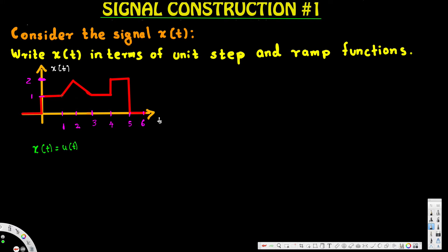This holds until a certain point, because after that we have a ramping function — a ramp going up with slope of one. If you look at the points: at one it's one, at two it's two, so the slope is one. It's shifted one unit to the right, so we have to add r(t - 1).